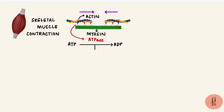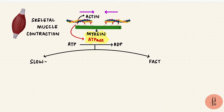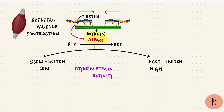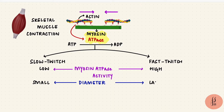This ATP hydrolysis can be fast or slow — that depends on myosin ATPase activity. So there are slow twitch skeletal muscle fibers which have low myosin ATPase activity, and fast twitch fibers which have a higher myosin ATPase activity. The slow twitch fibers are smaller and the fast twitch fibers are larger.